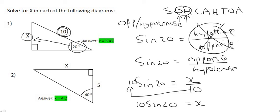You then pop all of that in on the calculator, so you type in 10 sin 20 on your calculator. And to two decimal places, that's going to give us x equals 3.42.